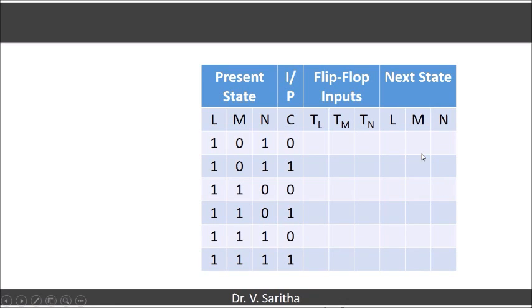Now we are supposed to determine the next state for these particular present states. So 5, 6, 7 are the invalid states. If these invalid states are going to the valid states which are nothing but from 0 to 4, that is if the next state is coming among 0 to 4, then we can say that the circuit is a self-starting circuit. Now how to get the next state here?